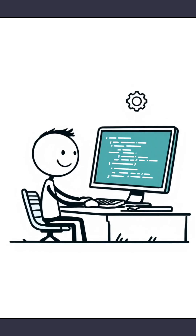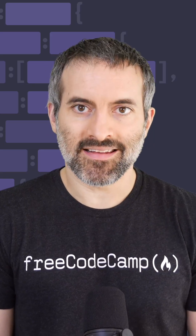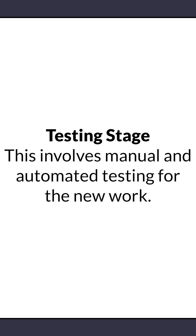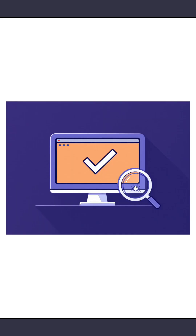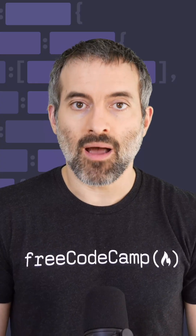Once the implementation stage is complete, the software team moves into the testing stage. This involves manual and automated testing for the new work. Sometimes the team tests out the application throughout the entire development stage to catch and fix any issues that come up.